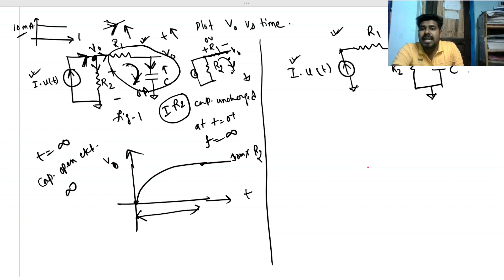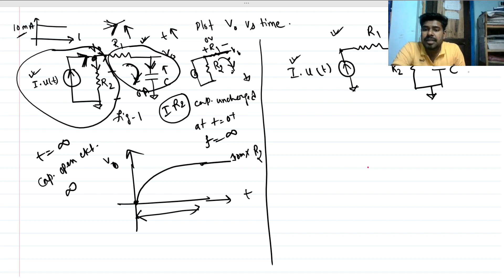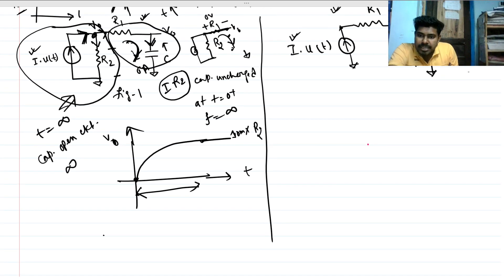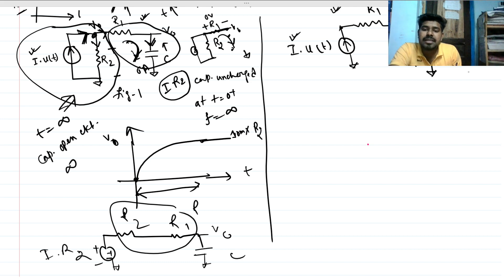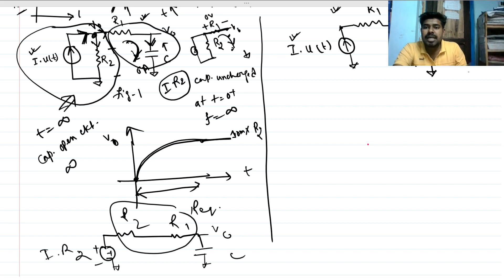Another way to interpret this problem: we can convert this branch into a Thevenin equivalent using source transformation — converting the Norton equivalent to a Thevenin equivalent. The resulting circuit has a voltage source I times R2, with R2 and R1 in series driving the capacitor, where V-out is measured across it. R2 and R1 in parallel form the equivalent R. The circuit becomes a normal RC circuit with a voltage source, and the response is exponential — this is our final waveform.